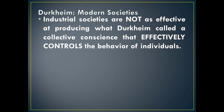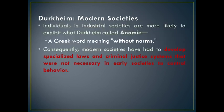With respect to modern societies, Durkheim said that industrial societies are not as effective at producing what he called collective conscience, which effectively controls the behavior of individuals. He argued that individuals in industrial societies are more likely to exhibit what he called anomie, derived from the word meaning 'without norms.' Consequently, modern societies have had to develop special laws and criminal justice systems that were not necessary in early societies to control behavior.